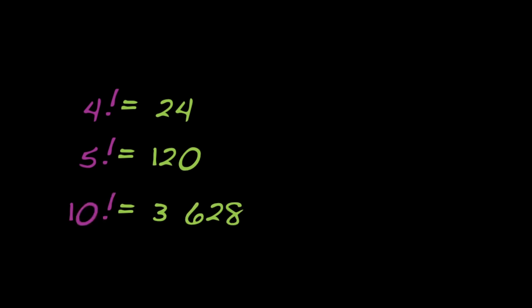For instance, four exclamation point, or four factorial, stands for four times three times two times one. So four factorial is 24, five factorial is 120, and ten factorial is over three million. Wow, that's a combinatorial explosion of choices.